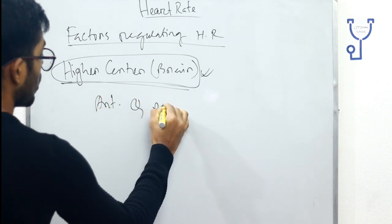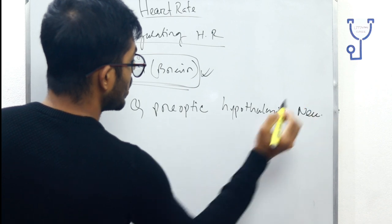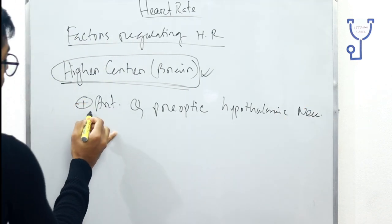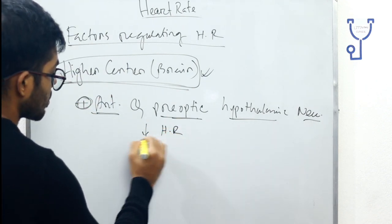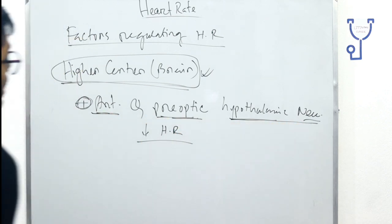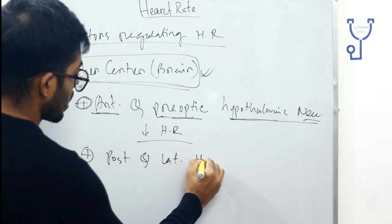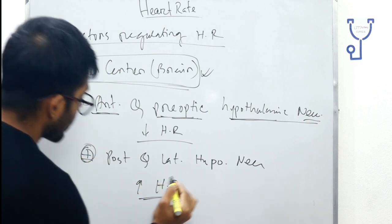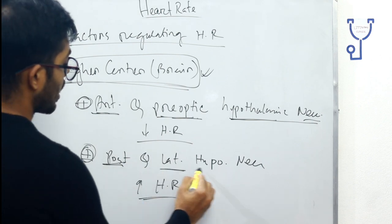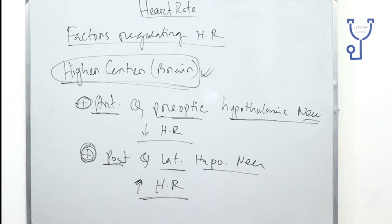The anterior and preoptic hypothalamic nuclei, if stimulated, cause the heart rate to decrease. The posterior and lateral hypothalamic nuclei, if stimulated, cause the heart rate to increase. This is the function of the higher center in regulating heart rate.